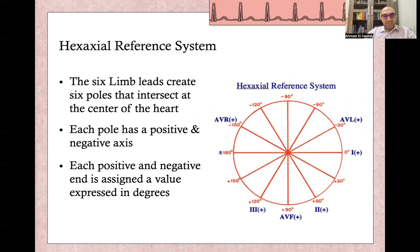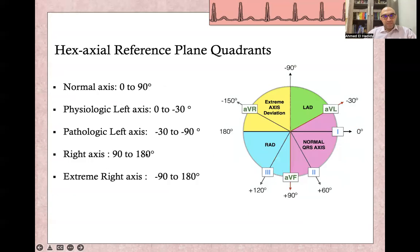Let's review our hex-axial reference system. The six limb leads create six pools of intersecting leads, and the center is the heart. Each pool has a positive and negative axis, and each is assigned a value. Lead I is zero, lead II is positive 60, lead aVF is positive 90, lead III is positive 120, lead aVR is negative 150, and lead aVL is negative 30. This is the hex-axial reference system.